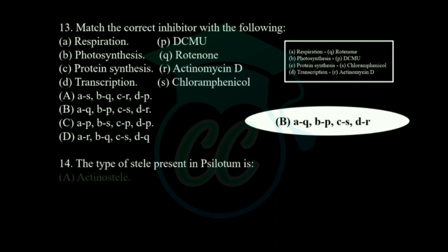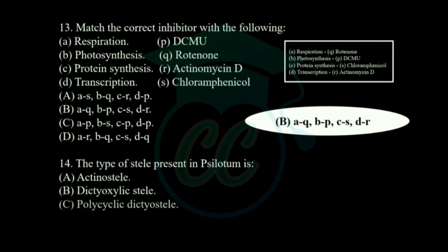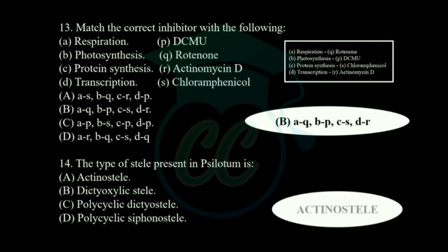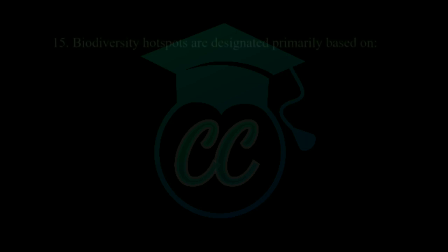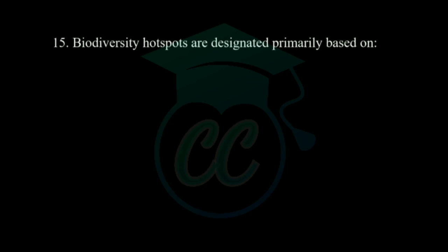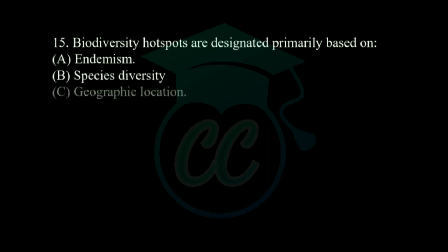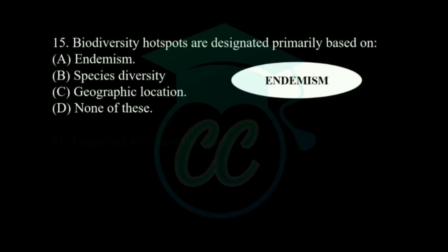Next question: the type of stele present in Selaginella is? Options: actinostele, dictyocyclic stele, polycyclic dictyostele, and polycyclic siphonostele. The correct answer is actinostele. Next question: biodiversity hotspots are designated primarily based on — options: endemism, species diversity, geographic location, and none of these. Biodiversity hotspots are designated primarily based on endemism.